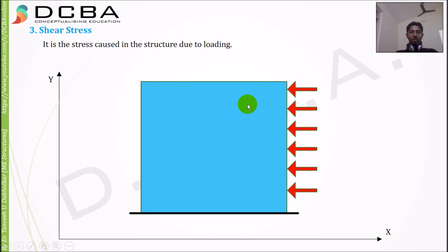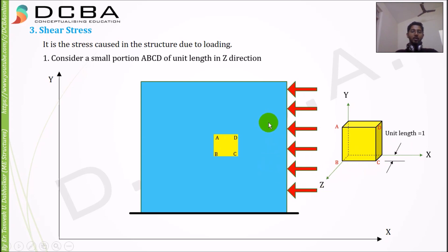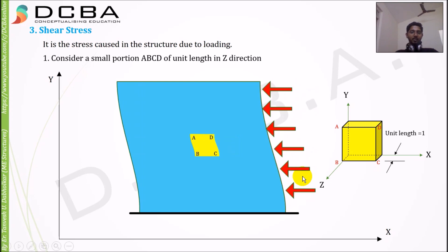Now consider this structure which is being loaded in a horizontal manner. We will consider a small portion ABCD of unit length in Z direction. I have shown that prism ABCD and it has a length of one unit in Z direction. Because of this kind of loading, the structure will deform and there will be a stress formation in the entire body of the structure.